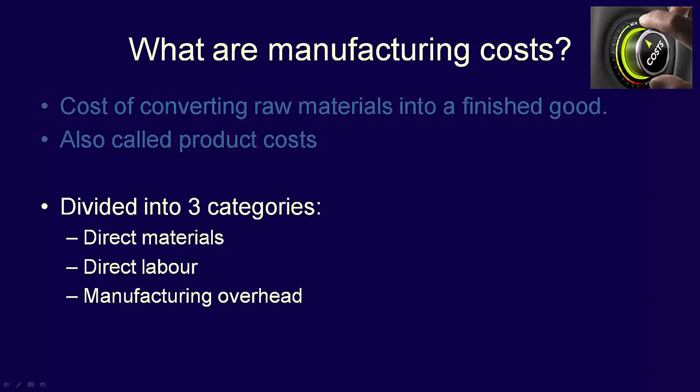Manufacturing costs are divided into three categories: direct material, direct labour, and manufacturing overhead. Let's explore each one individually.